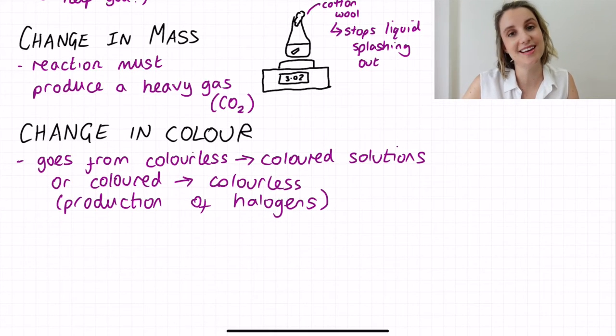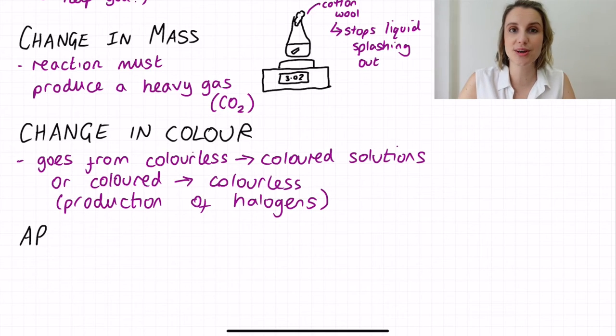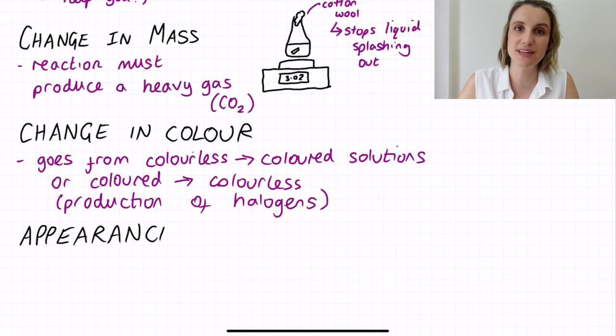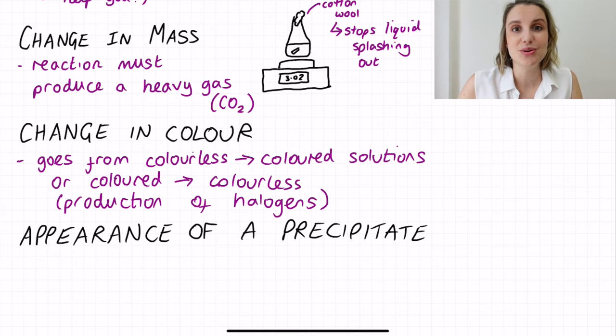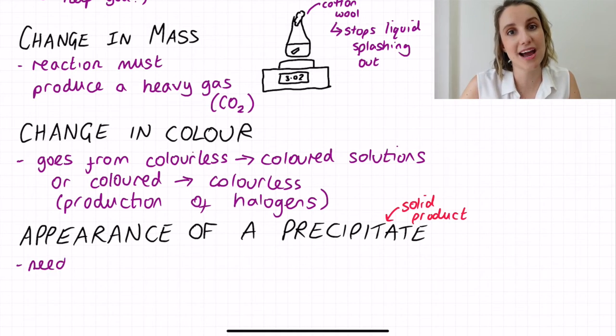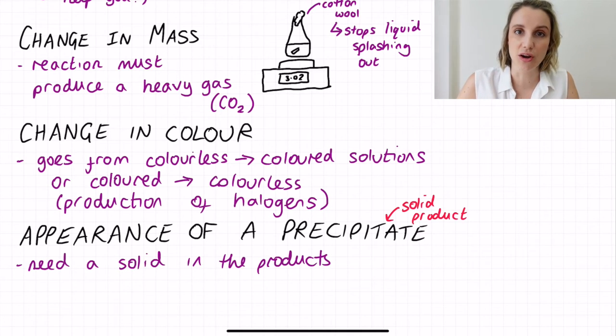The last option in GCSE is that you might also get the appearance of a precipitate or a solid product. For this you need a solid to appear at the end of the reaction that wasn't there at the beginning. Normally you start with two aqueous reactants and then at the end you're ending up with a solid product.